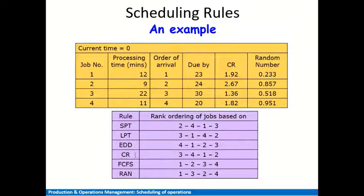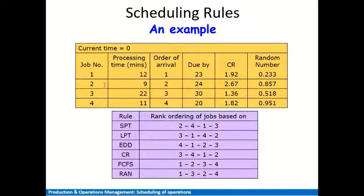For the Critical Ratio method, we order jobs from lowest to highest CR value. The lowest CR is 1.36 for job three, so job three goes first. Next is 1.82 for job four. Then 1.92 for job one. Finally, 2.67 for job two goes last. The CR sequence is: 3, 4, 1, 2.